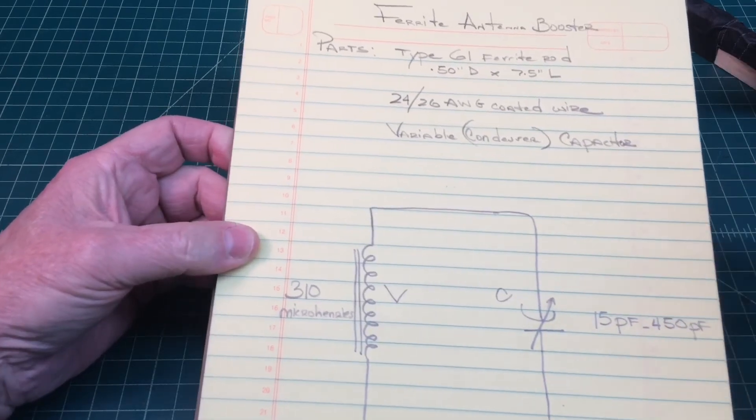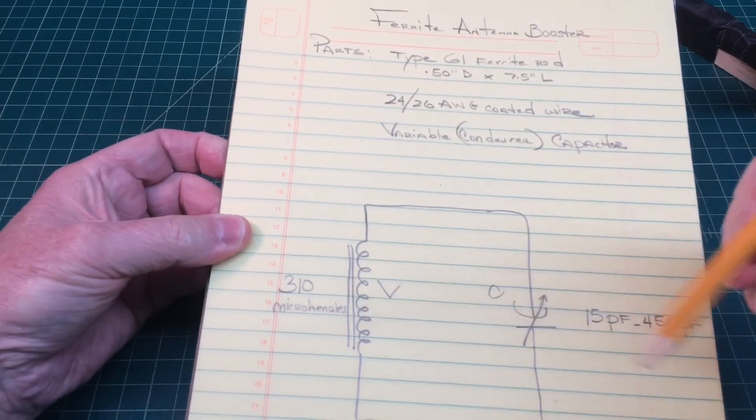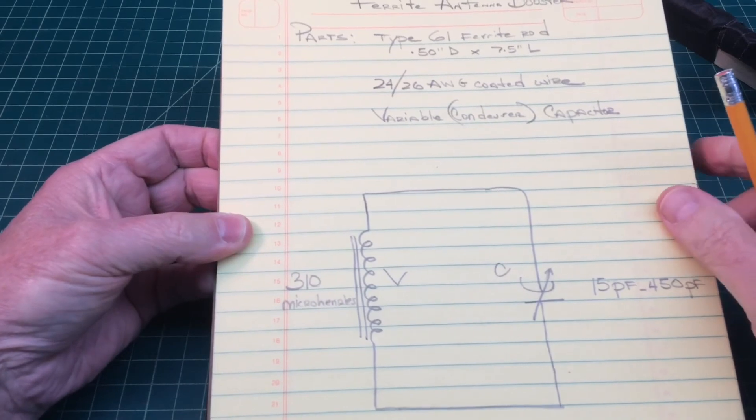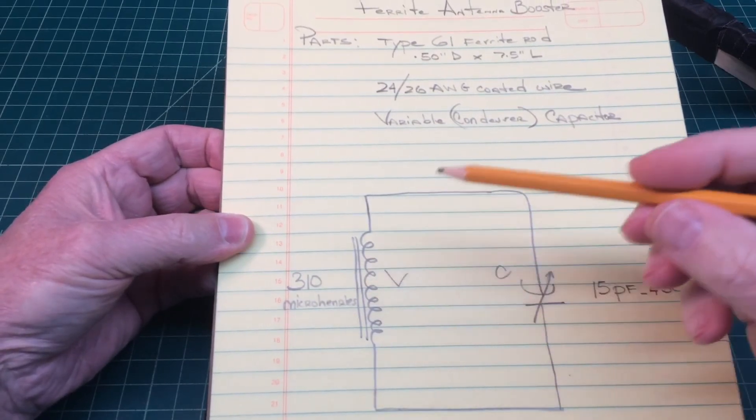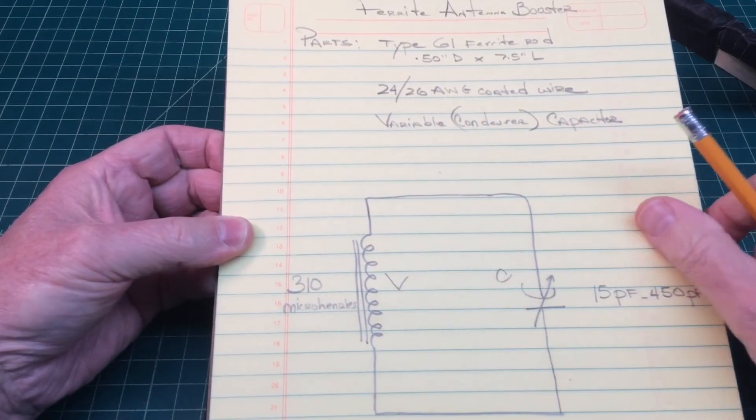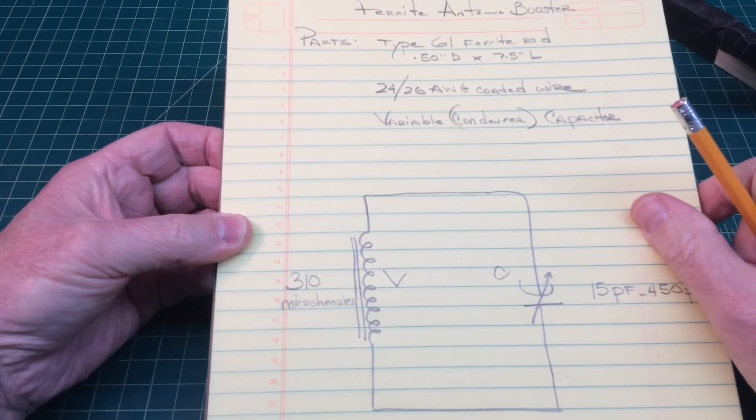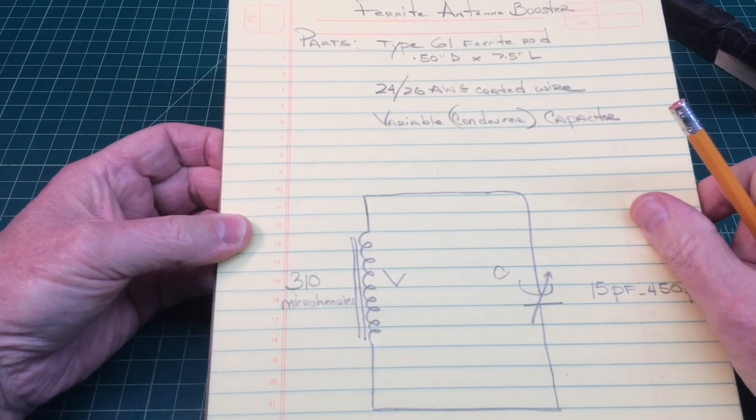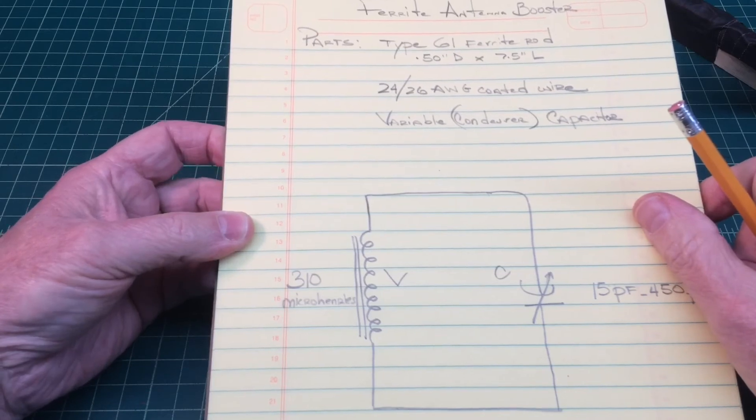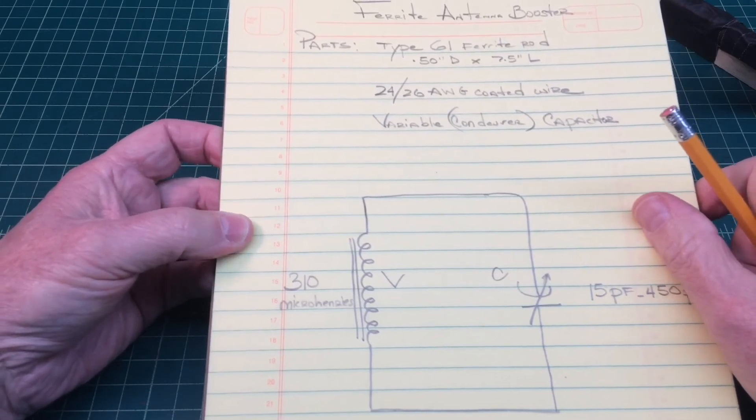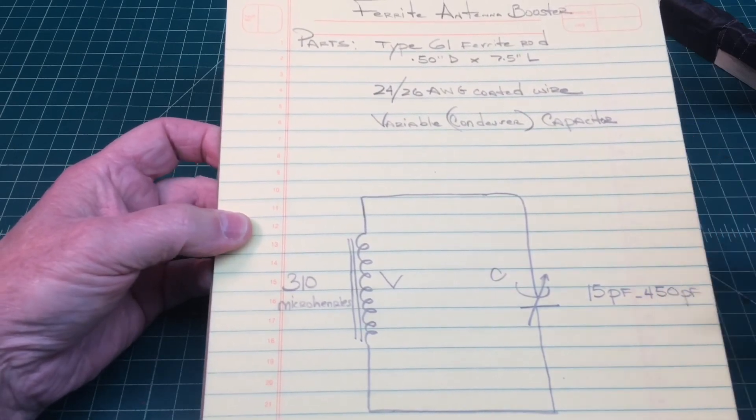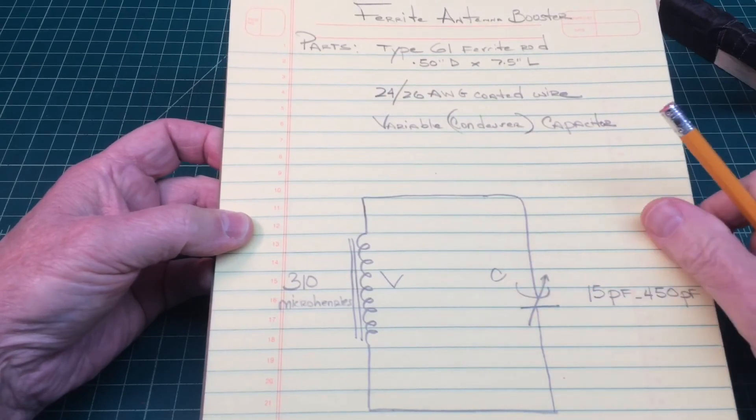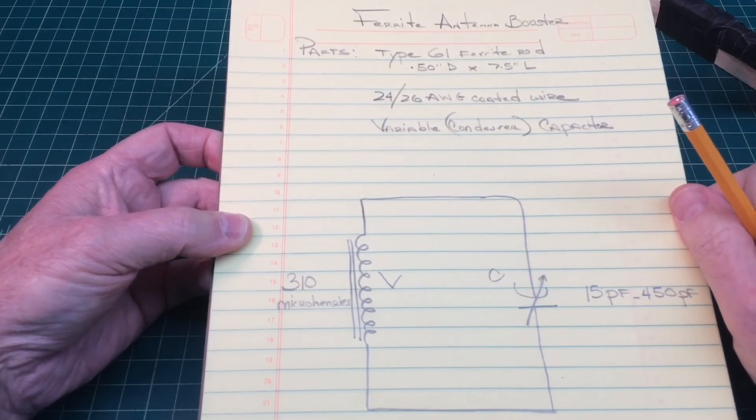And for those that don't have maybe the ferrite material, you can still get satisfactory results just using a coil of wire around a paper tube or so, maybe a hundred turns or more and get some added value that way. If you happen to have an old tuning condenser, maybe give that a try as well.